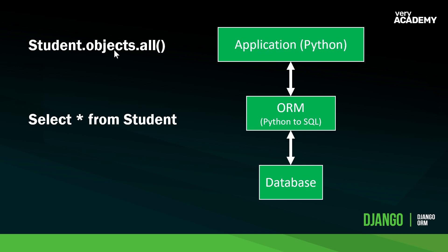What student.objects.all is essentially saying in Python is that we want to collect all the data from the student table. We think of this as a Python object. That gets sent across to the ORM, which maps the Python object to a database object — loosely speaking, going from Python language to SQL language. SQL is the language the database understands. So student.objects.all translates to the SQL equivalent: SELECT * FROM student.